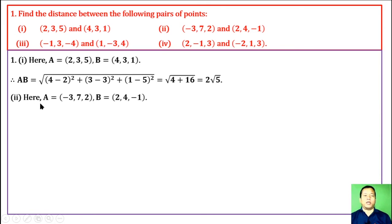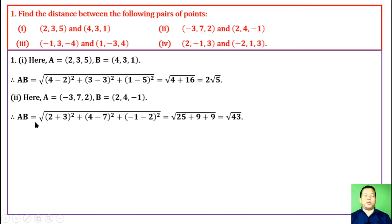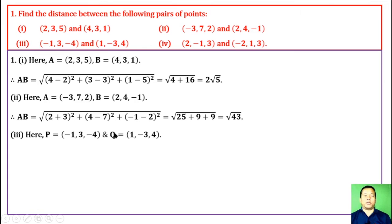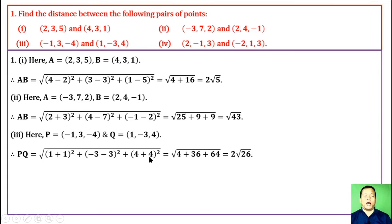For part 2, with points A and B, distance AB = √[(x2−x1)² + (y2−y1)² + (z2−z1)²]. Substituting values: √[4 + 4 + 36 + 64] simplifies to give 104 inside the root, whose square root is 2√26.